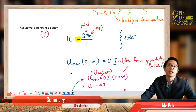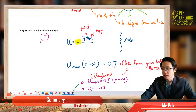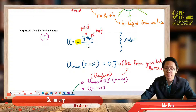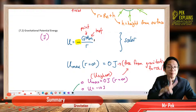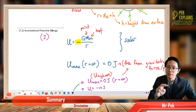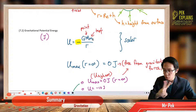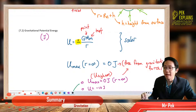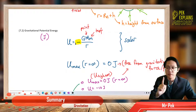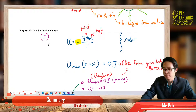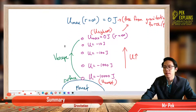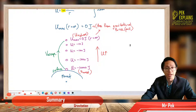Now let us go to gravitational potential energy. The formula is U equal to negative GMm over R. So potential energy also depends on two masses. You must have two masses, and you must have a negative sign — the negative sign is very, very important. It is a scalar quantity; it has no direction, no arrow. The unit is Joule. Now let us look at what is meant by this gravitational potential energy.